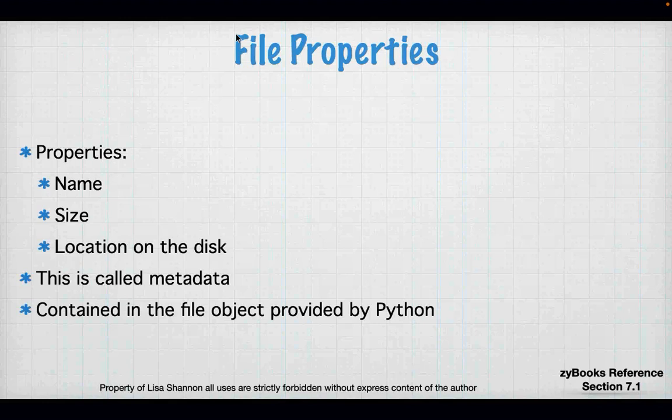There are modules out there that allow you to get a file based on an independently normalized path, and then Python takes care of whether it's Windows or Linux. Files have properties — name, size, and location on disk — and this is called metadata. It's contained in the file object provided by Python, in the file descriptor.